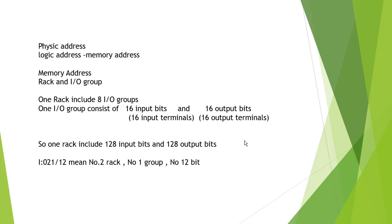One rack includes eight IO groups, and one IO group includes 16 input bits and 16 output bits. So that means one rack includes 128 input bits and 128 output bits. One group has 16 bits and one rack has 8 IO groups, so 8 times 16 equals 128.